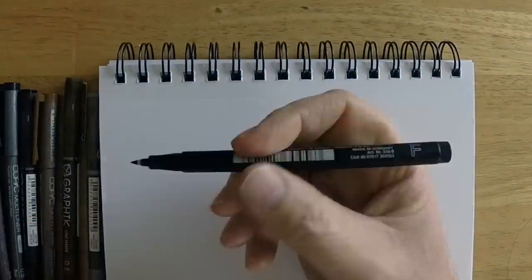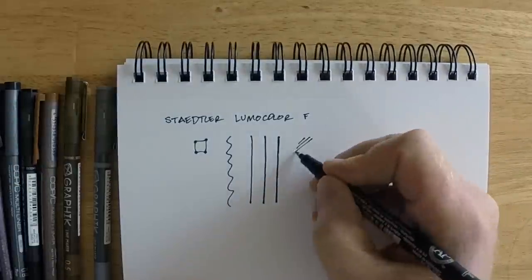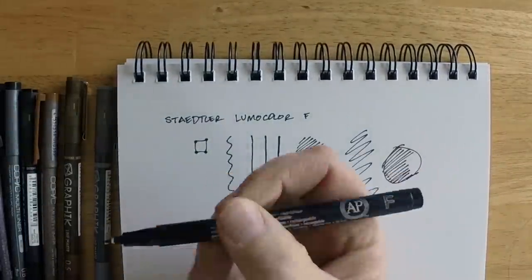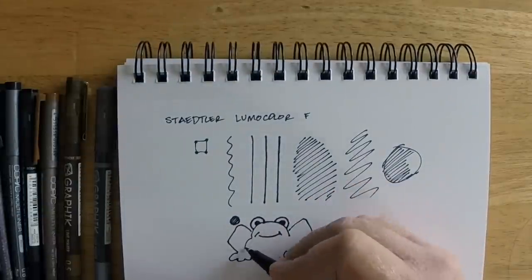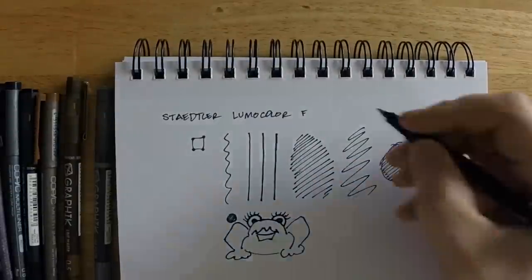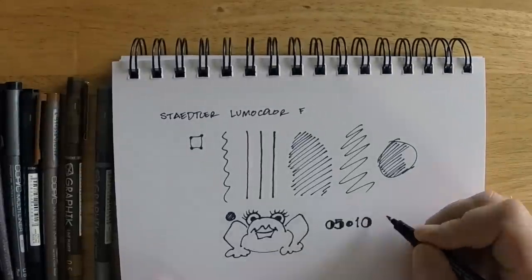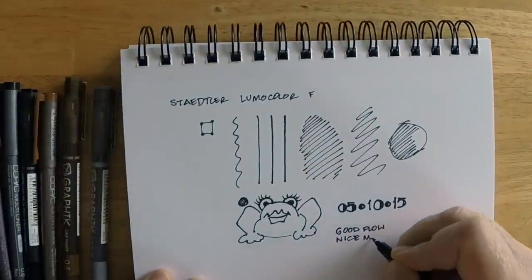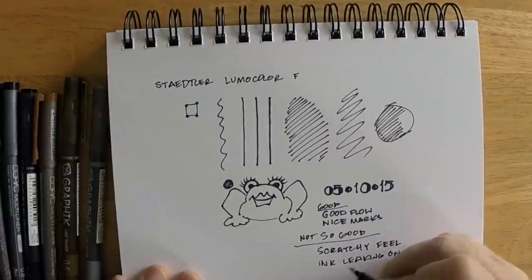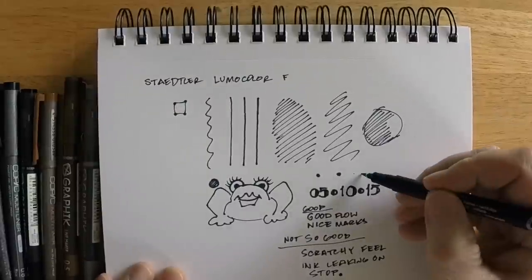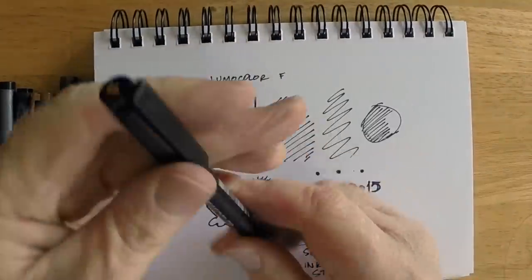Okay, so the first pen we're going to test here is the Staedtler made in Germany. This is from the Lumocolor line and it's a fine. You can see the ink flows quite nicely. There aren't a lot of gaps in the paper if you go fast, although there are a few. But if you set the pen down on the paper for any length of time, the ink will pool and soak into the paper, and you'll get kind of an expanding pool of black. There's a little bit of a scratchy feel to the pen as you write.